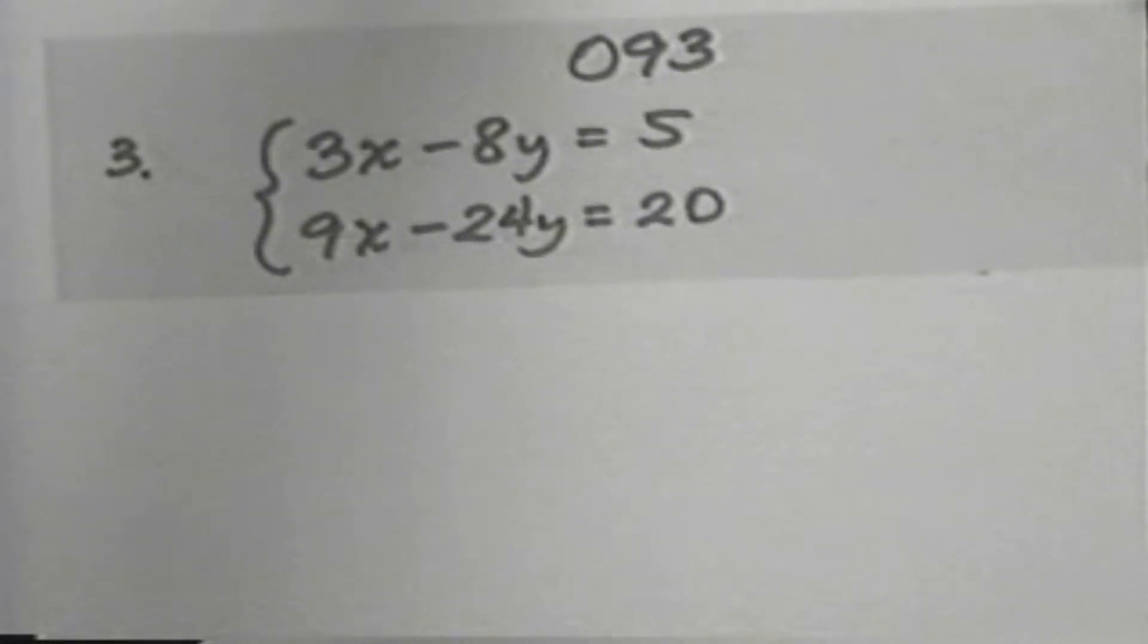For our third example, we have the system: 3x subtract 8y equals 5, 9x subtract 24y equals 20.